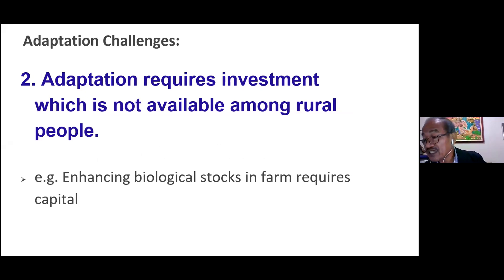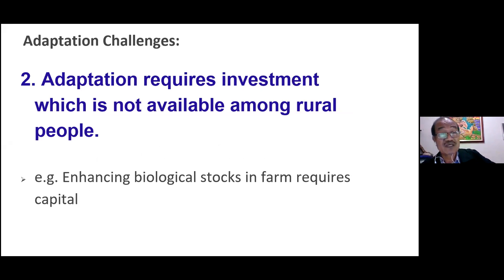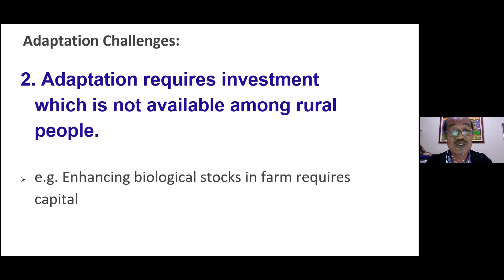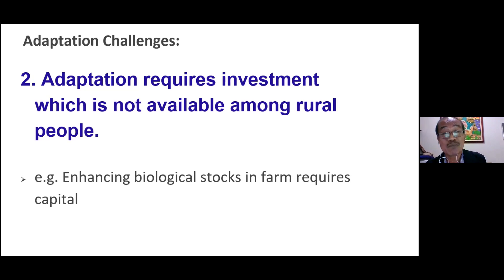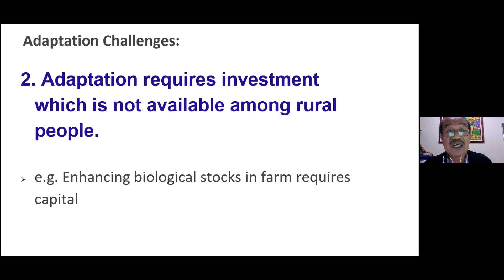Challenge number two: adaptation requires investment which is not available among rural people. To do adaptation, you need some investment — you do diversification, you want to acquire livestock as an adaptation strategy. But if you want livestock, you have to buy them, and if people in rural areas don't have much money to purchase these inputs, this is a real challenge. The lack of capital prevents people from purchasing additional components for their farm as adaptation to climate change.